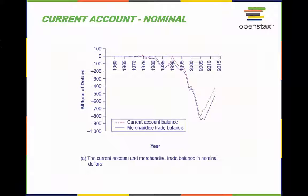This graph shows the current account balance and the merchandise trade balance in billions of dollars from 1960 to 2012. If the lines are above zero dollars, the United States is running a positive trade balance and current account balance. If the line falls below zero dollars, the United States is running a trade deficit and a deficit in its current account balance.